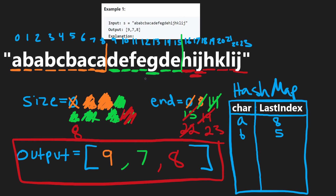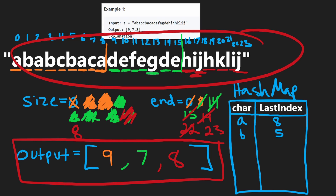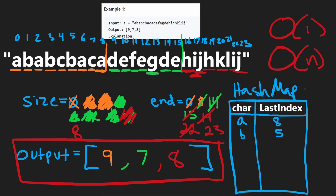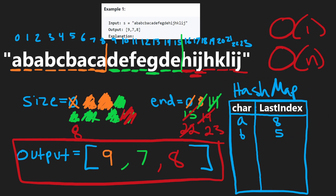We got the same output as the example. We did two passes — one to build the hash map and one to build the output — but all we did was scan through the input. So the time complexity is O(N) and the memory complexity is O(1), since the hash map is limited to 26 characters.